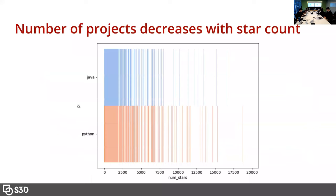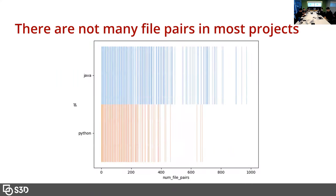This is a distribution of projects based on star count. You might say that if you don't have enough testing-and-code pairs, you should just mine more. But there are more projects with fewer stars than with greater stars, and we found that projects with fewer stars don't tend to be very well tested. We have around 400,000 file pairs in total, but the trend is that most projects tend to have fewer file pairs since they don't have as many stars.